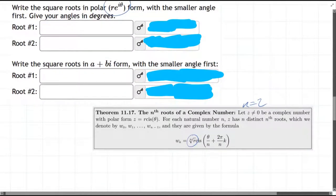So let's go ahead and write this out for when n equals two. We have square root of r, cis, cosine i sine, theta over two plus two pi over two, k, for k equals zero and one. So there'll be two of these.